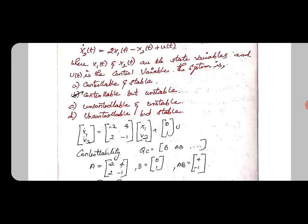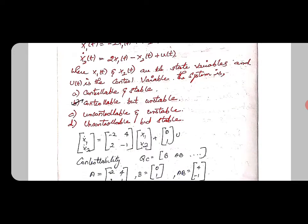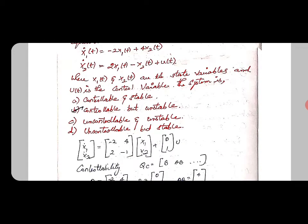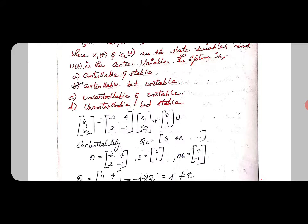By controllability condition, that is Kalman's test, which is Qc = [B AB]. From the given equation, we form the matrix: [x1; x2] = [-2 4; 2 -1][x1; x2] + [0; 1]u.